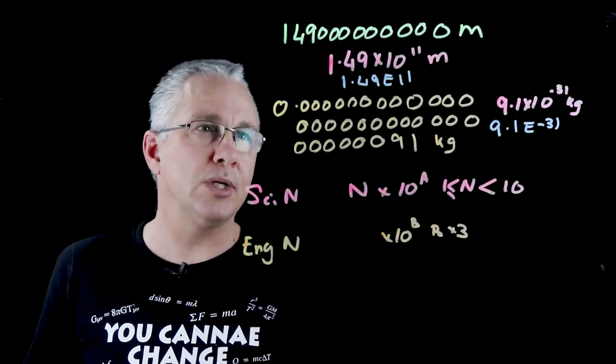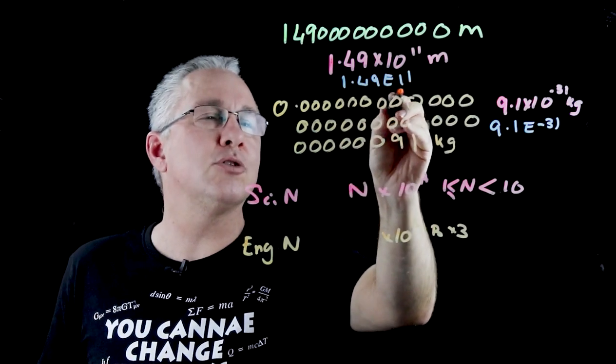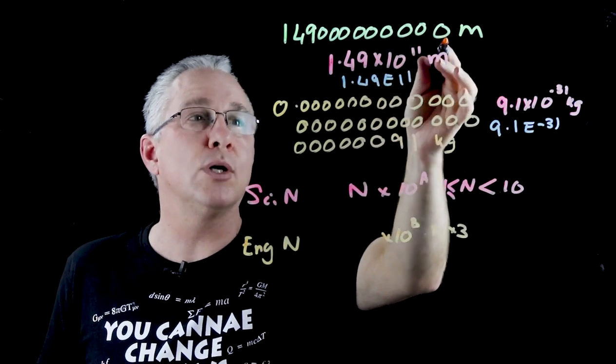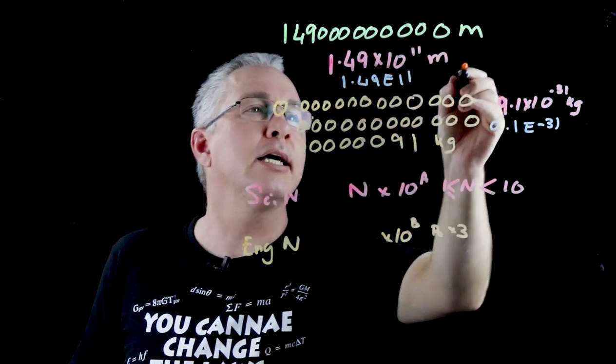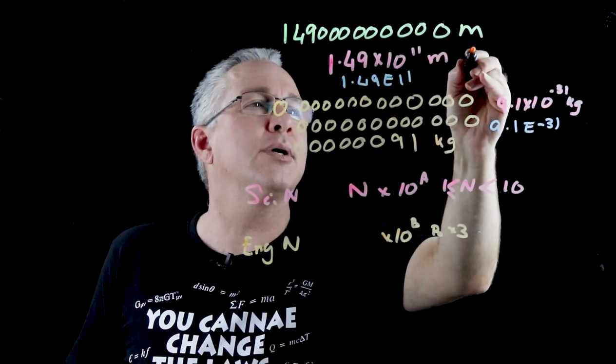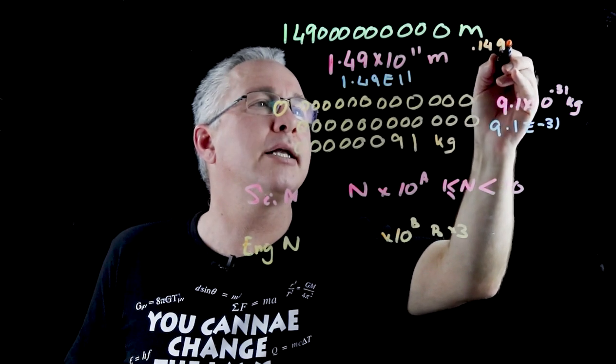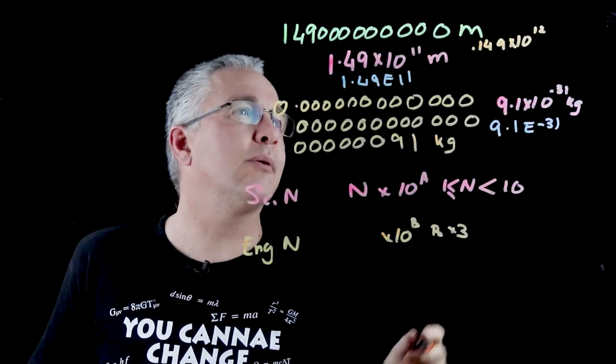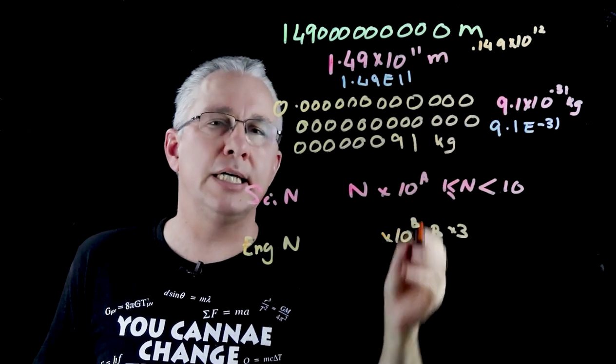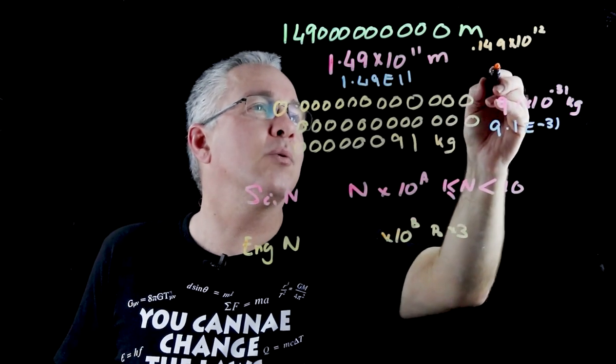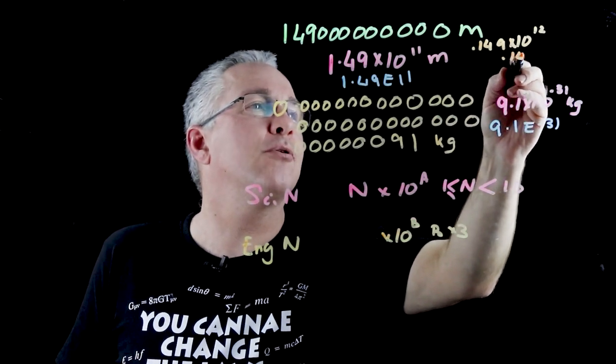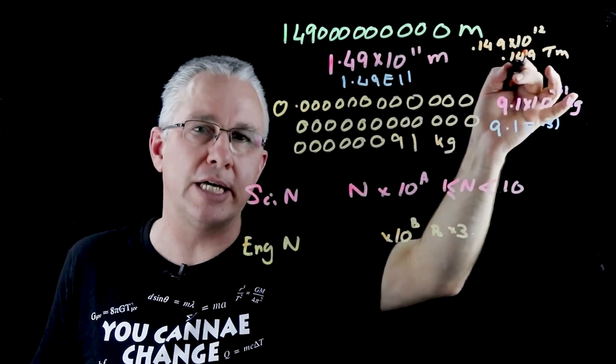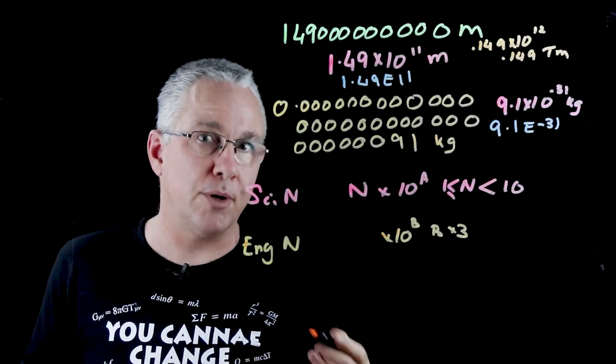Now, what does that mean? Well, let's say I change this to the nearest power of 3. Now, I could go either 10^12, or I can go to 10^9. If I go to the power of 12, I'm going to get 0.149 × 10^12. Now, why would I want to do that? Well, that means 10^12 is a tera. So, in other words, I have 0.149 terameters. You can see, by putting in engineering notation, I can change it to the appropriate prefix.